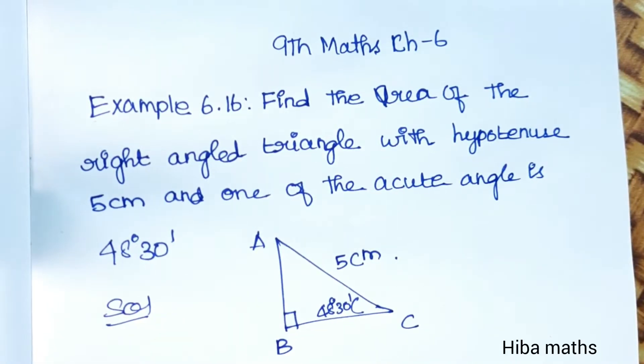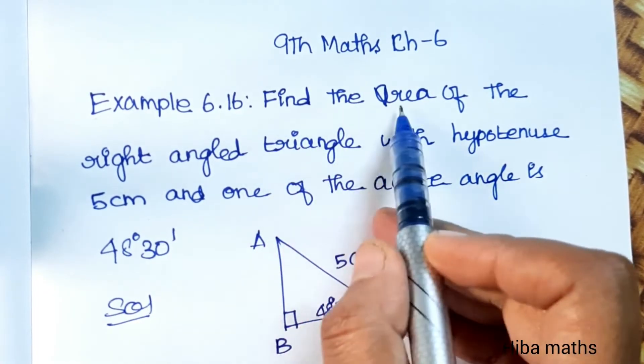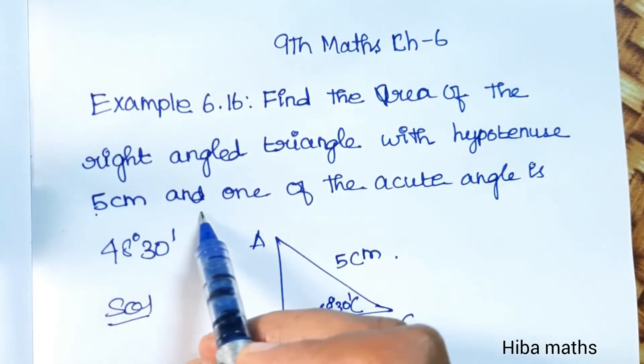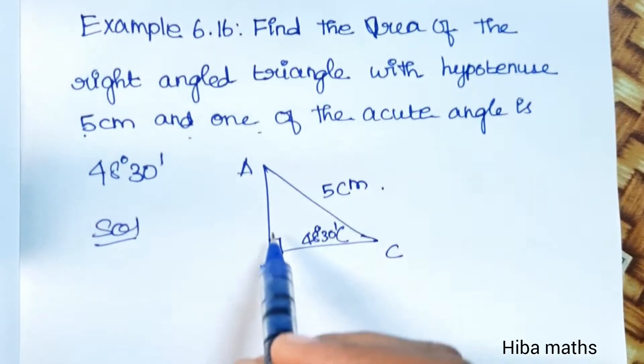Hello students, welcome to Hiba Maths 9th Standard Math Chapter 6 Example 6.16. Find the area of the right-angled triangle with hypotenuse 5cm and one of the acute angles is 48 degrees 30 minutes.